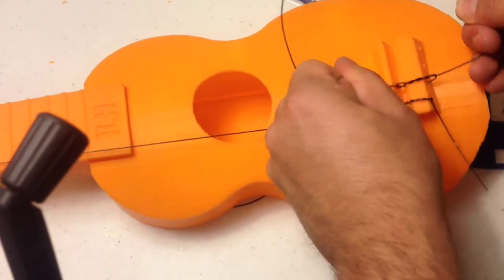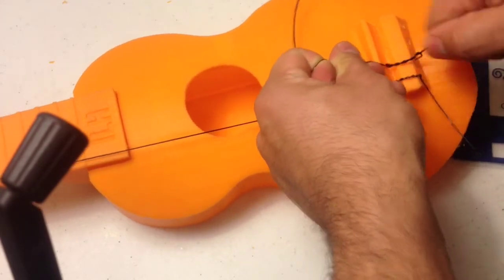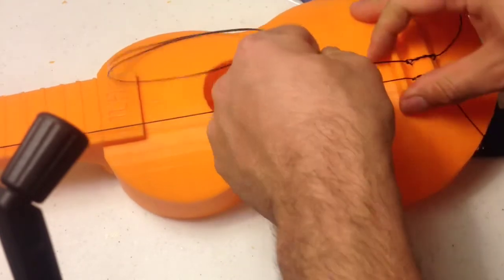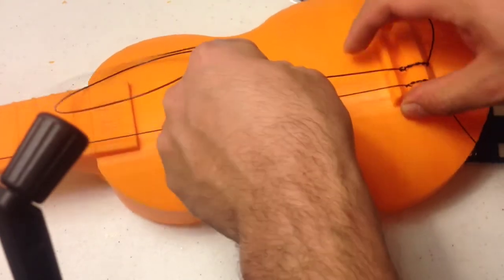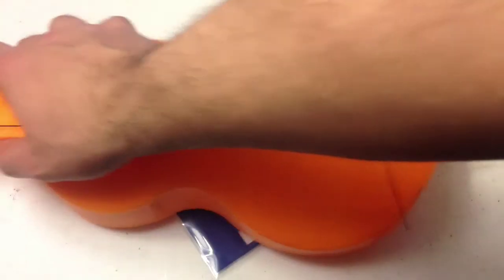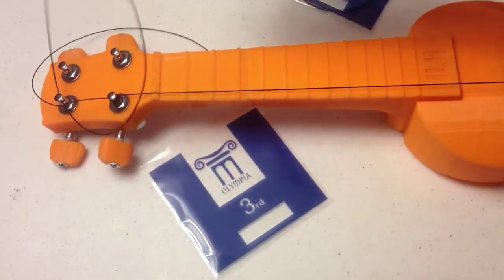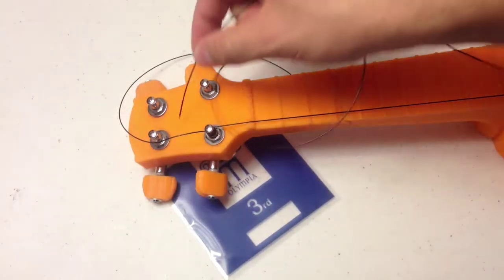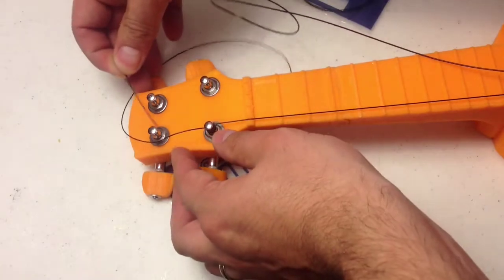There's three, and that looks good, so then you just pull it tight, and you can see again that's not going anywhere. Now that you have that done, you just take the other end and thread it through the end of the tuner, just like you did last time.